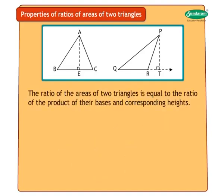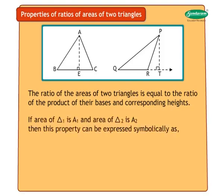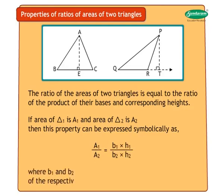Hence, the ratio of the areas of two triangles is equal to the ratio of the product of their bases and corresponding heights. If area of triangle 1 is A1 and area of triangle 2 is A2, then this property can be expressed symbolically as A1 upon A2 is equal to B1 into H1 upon B2 into H2, where B1 and B2 are the bases and H1 and H2 are the heights of the respective triangles.